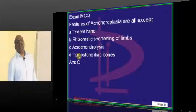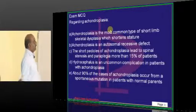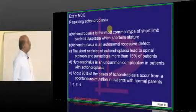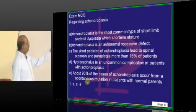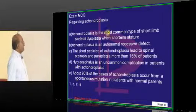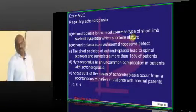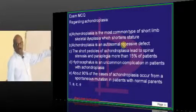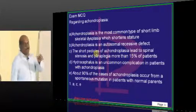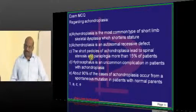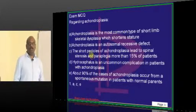Achondroplasia is different from achondrolysis. In achondroplasia, you have short limbs, skeletal dysplasia, and short stature — it is autosomal dominant. The short pedicles of achondroplasia lead to spinal stenosis and paraplegia due to compression on the spinal cord.